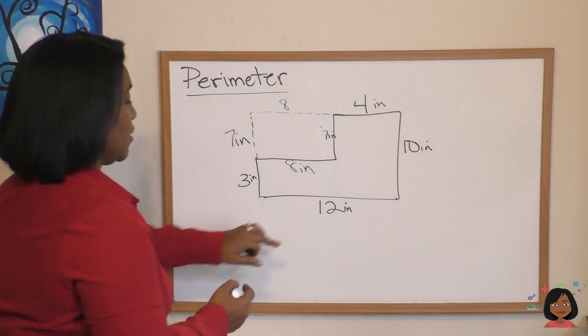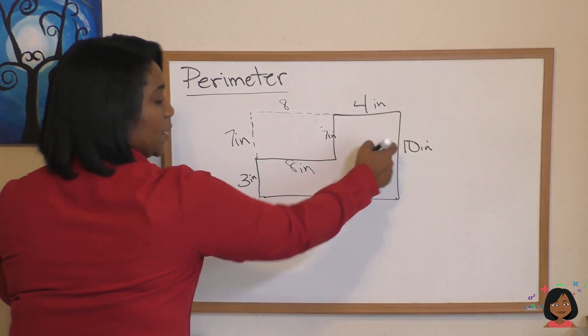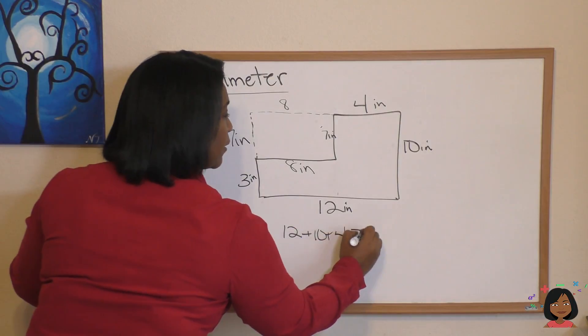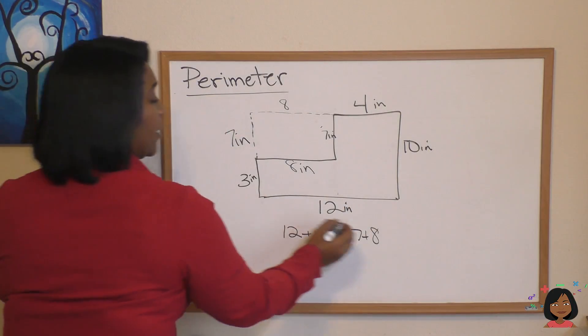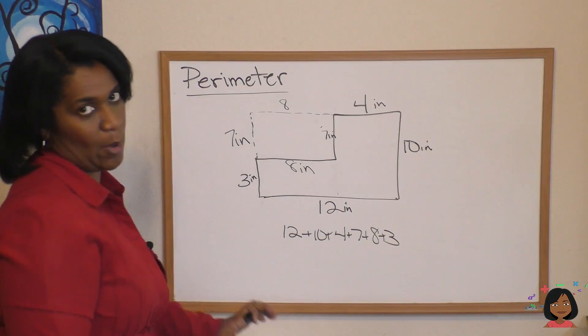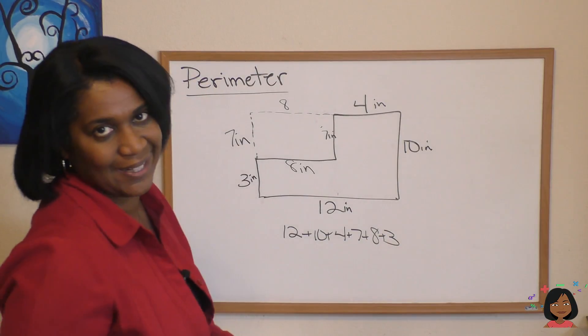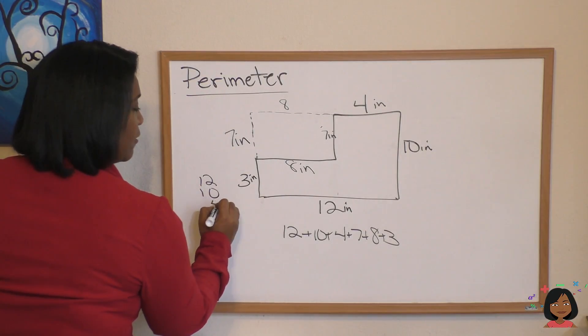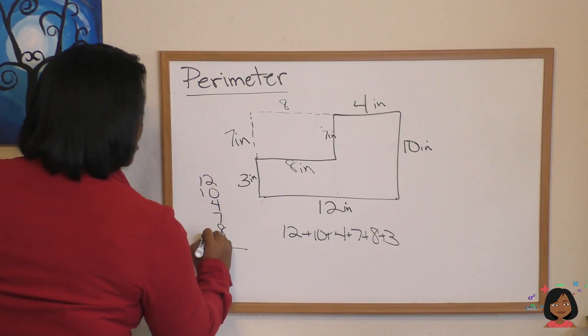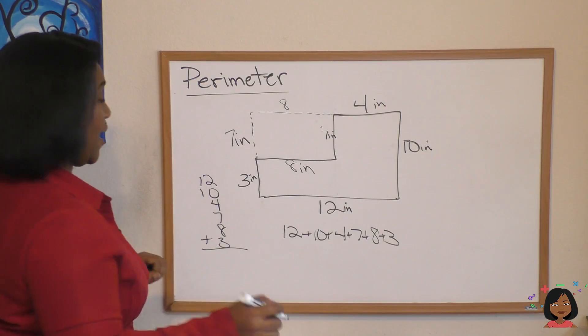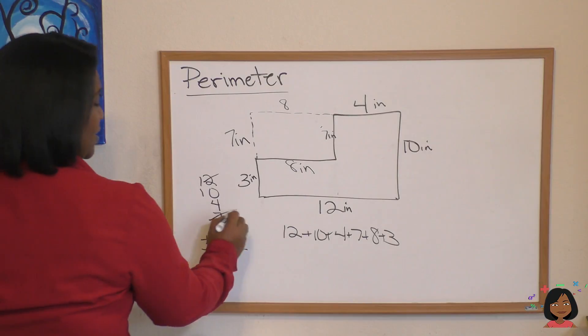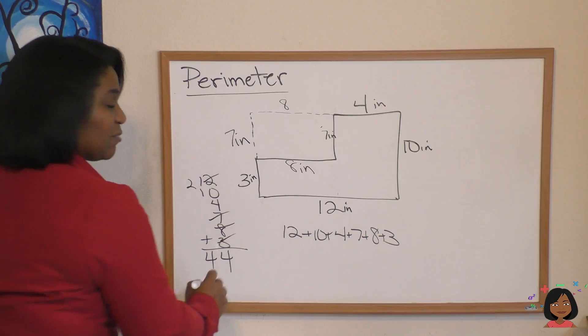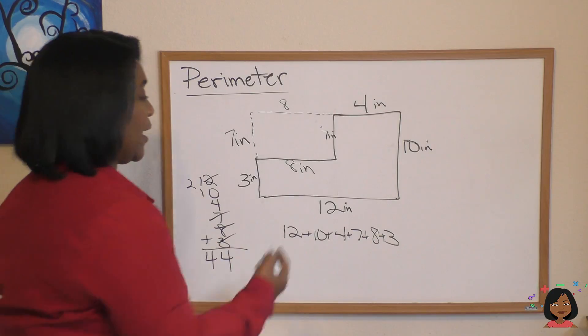Now I have something for every side. I can go ahead and add them up. Let's do it. So we've got 12 on the bottom, 10 on the side, 4 up that top, 7 right here, 8, and 3. Now I have to add. So I'm doing it like this: 12, 10, 4, 7, 8, and 3. Looking for groups of 10: 8 and 2 is 10, 7 and 3 is 10, that's 24. So I'm always looking for groups of 10. So my answer for perimeter is 44 inches.